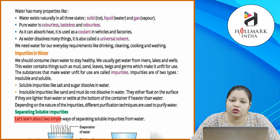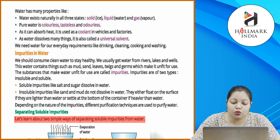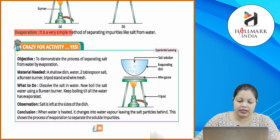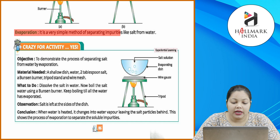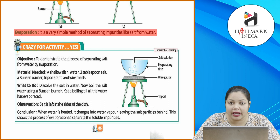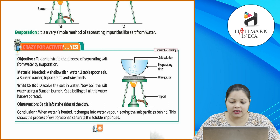Separating soluble impurities: let's learn about two simple ways of separating soluble impurities from water. Evaporation is a very simple method of separating impurities like salt from water. Agar aapne water mein salt milaya hai, to wo ek impurity aa gayi — wo salty water ho gaya hai jo aap drink nahi kar sakte. To use hatane ke liye, use pure banane ke liye, aap evaporation jo method hai wo use kar sakte hain.